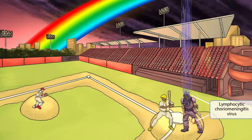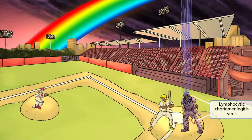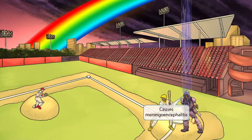Our next character in the scene is this limping umpire. Notice that he was just hit in the knee with a baseball — that's the risk you take when you're an umpire. Anyway, limping umpire sounds like lymphocytic, and the fact that he has a very unique helmet should make you think of the brain or meninges. So putting this all together, we get lymphocytic choriomeningitis virus, or LCMV. This is one of the two arena viruses you need to be familiar with for Step 1. The water on top of the umpire's helmet should help you remember that LCMV causes meningoencephalitis.